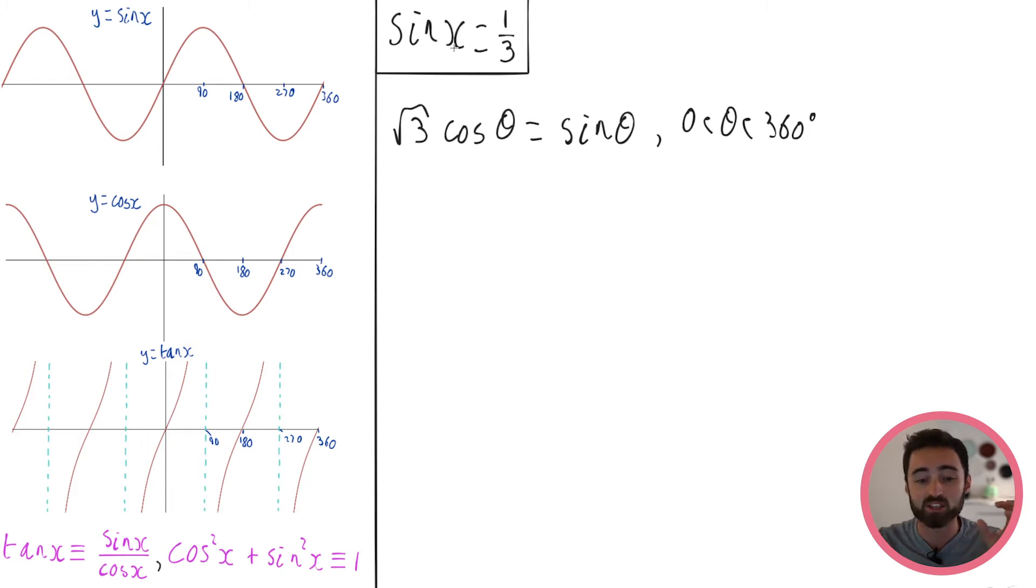But basically this is what we're looking for. We're looking for some trig function, cos sine tan, equals a number. This is the nice equation that we know how to solve. In reality you're going to get something grim looking like this. And what we need to do is use the identities to make it look like this. So we've got grim equation that's got like loads of trig functions. The goal is make it look like some trig function equals some number.